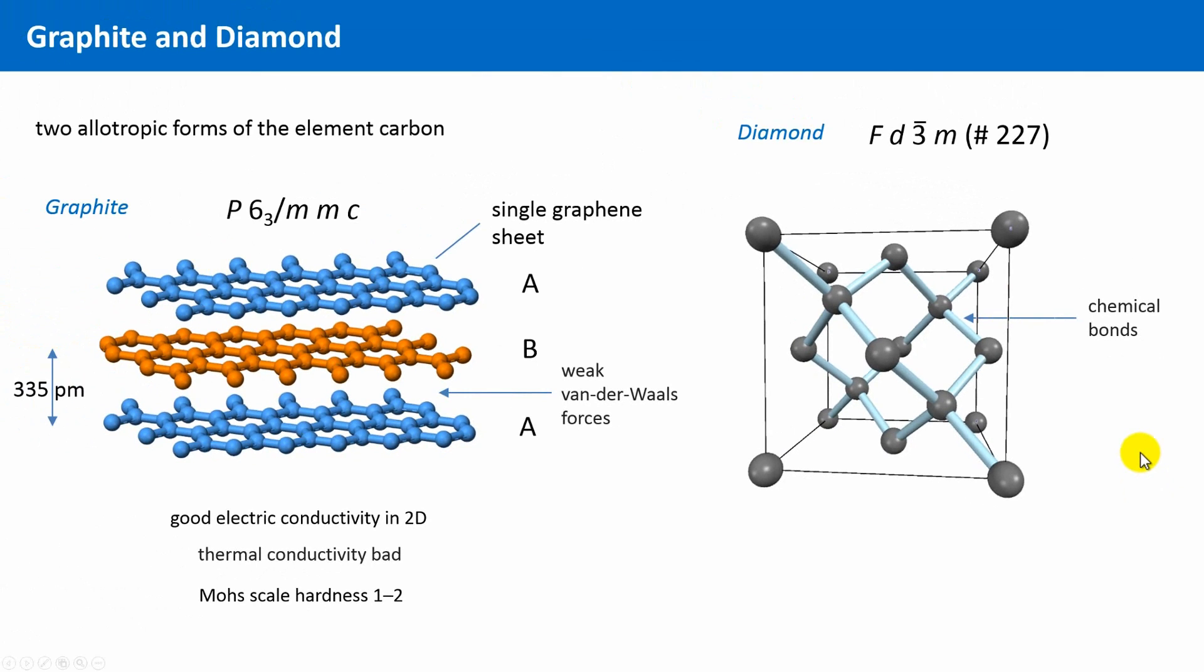So now we can easily understand why diamond is a bad electrical, but one of the best thermal conductors. And we have a certain idea why diamond is so hard. On this hardness scale of Mohs, diamond has the highest value of 10. Diamond is the hardest mineral known.